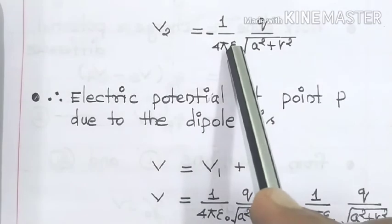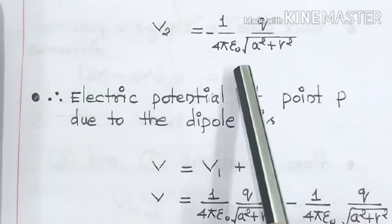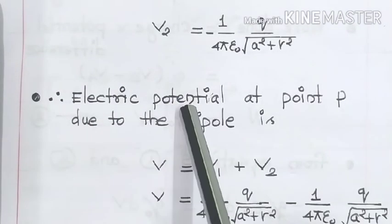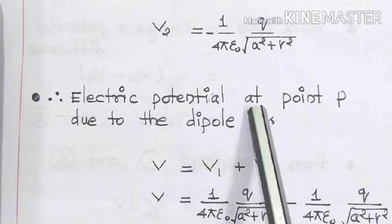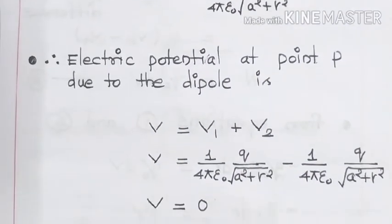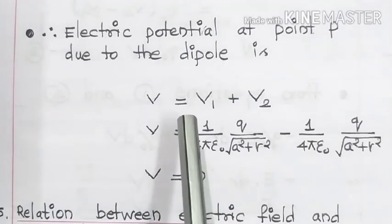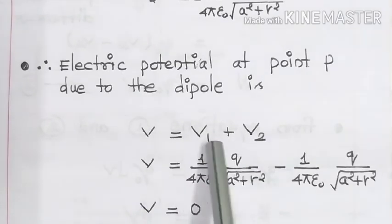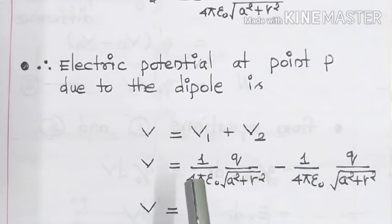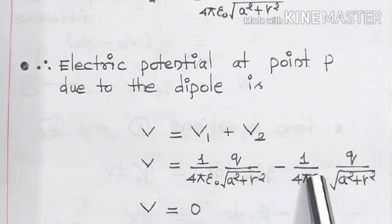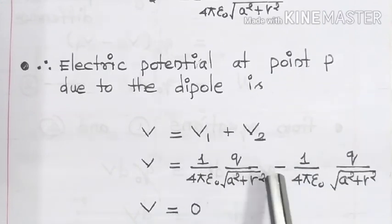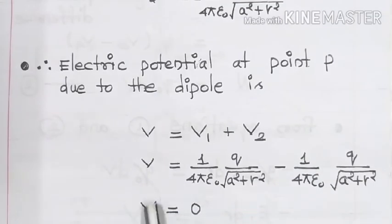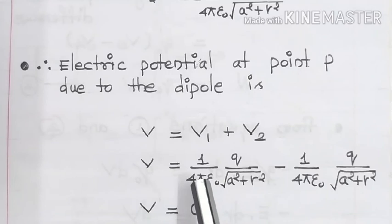So now we have calculated V₁ and V₂ separately for the point charges. Now we are going to calculate the electric potential for the dipole. Electric potential at point P due to the dipole: we need to add both the potentials, so V = V₁ + V₂. Both expressions are similar in nature but opposite in sign — one is plus and one is minus — so both get cancelled and we get 0. Therefore, V is equal to 0. The electric potential due to a dipole at a point on the equatorial line is zero.